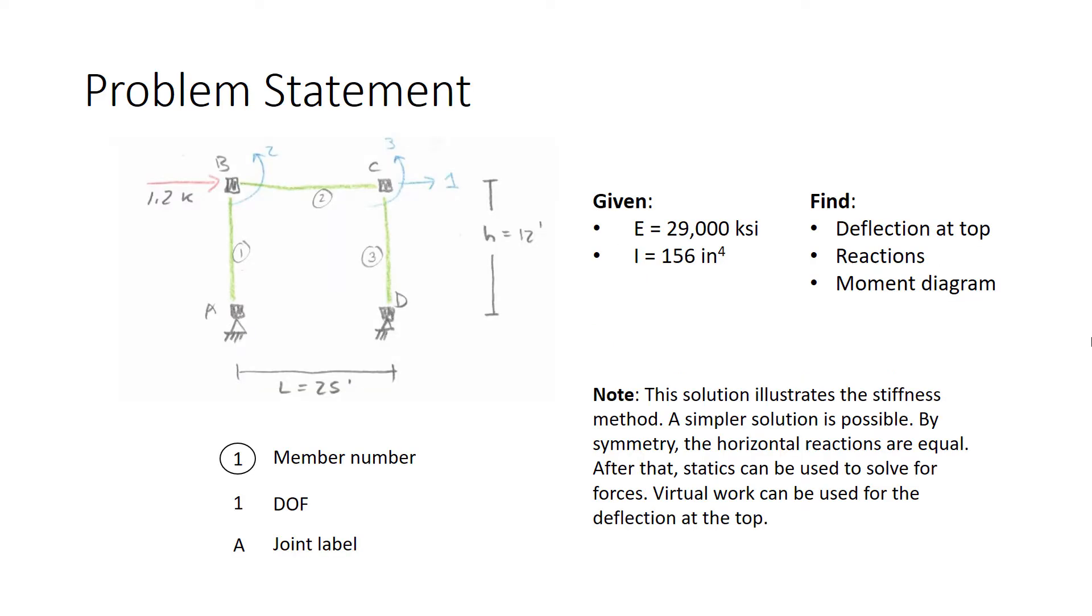In this example, we have a one-story, one-bay frame. It's 25 feet wide by 12 feet high. There's a 1.2 kip force applied at the top. The members and joints are labeled by numbers and letters, respectively. And the degrees of freedom are shown with blue arrows. Degree of freedom 1 is a translation of the top story. Degree of freedom 2 is a rotation at node B. Degree of freedom 3 is a rotation at node C.